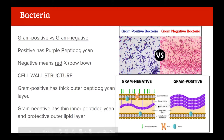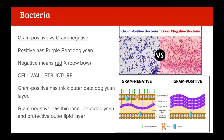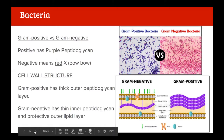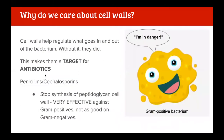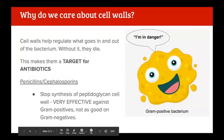We have a lot of antibiotics that target peptidoglycan to kill bacteria - our penicillins and cephalosporins. They are very effective against gram positives because gram positives have thick peptidoglycan, but they're not as effective against gram negatives because gram negatives have that extra outer membrane protecting them as well.